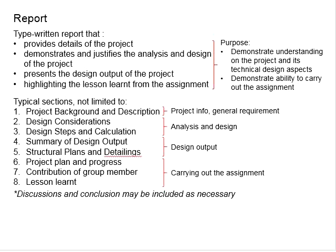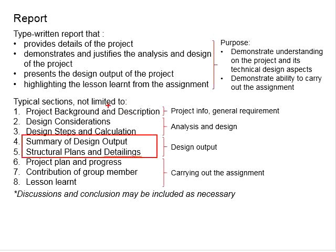It should be clearly stated where readers can cross-refer to relevant information, in case they need to cross-check something. There will also be structural plans and detailings, as the design outcome needs to be translated into structural plans and detailings so that contractors can refer to the plans in order to construct the building. There must be consistency in terms of the information for the summary of the design output as well as the structural plans and detailings. The structural plans and detailings need to have all the essential information, as contractors normally don't refer to the design report.